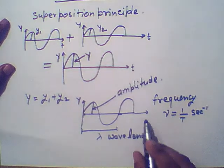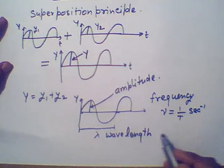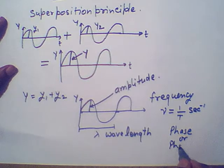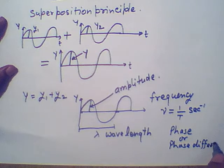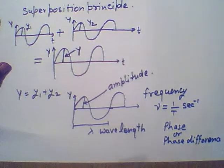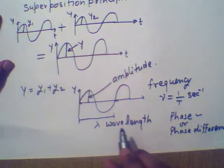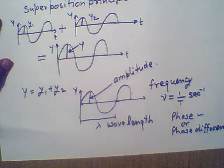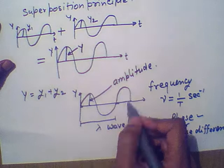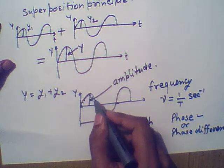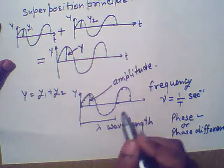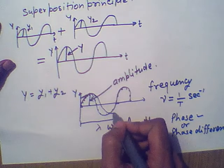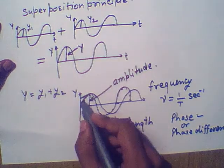The next concept is phase, or phase difference between two or more waves. To explain phase difference: if this wave starts from the origin and another wave also starts from the origin, there is no phase difference between them. But if a wave starts from a different point, it follows a shifted path, and there will be some phase difference between the two waves.